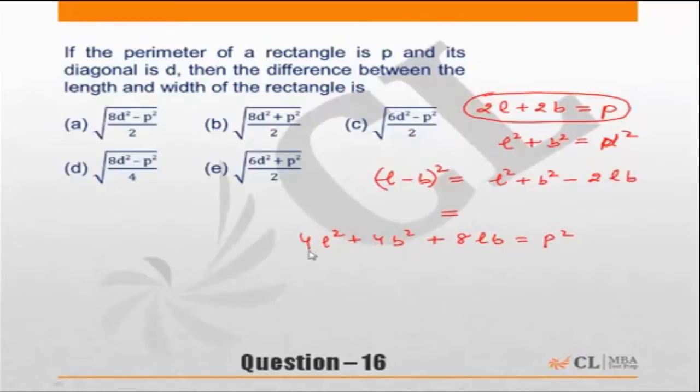So that is 4L square plus B square will give me 4D square plus 8LB is equal to P square. Or I can say LB from here will be P square minus 4D square by 8.